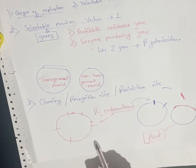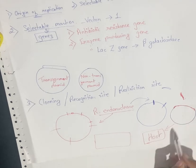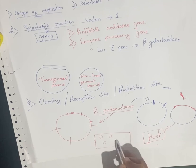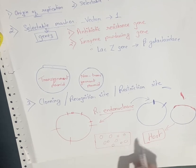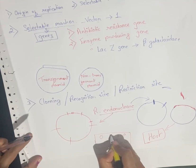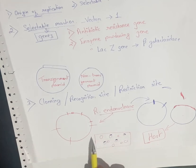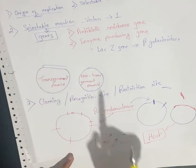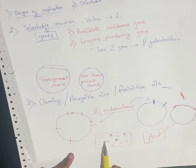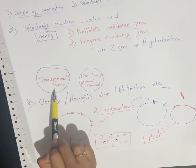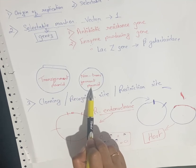To identify which plasmid has the gene of interest, the plasmid is introduced into the host cell, which is then cultured in a medium. In the culture plate, selectable markers help us identify whether a given plasmid is a transformant or non-transformant plasmid. Selectable markers are therefore essential to distinguish transformant plasmids from non-transformant ones.